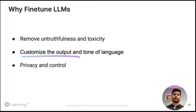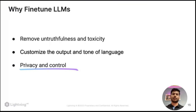Privacy and control is a very interesting aspect. If you use a ready-made API from OpenAI or another provider, they might update the model and after an update your current prompt might not work — the API might not get the same result after the update. If you use a fine-tuned LLM, you have control over when you want to update, and you will know to update the prompts accordingly.